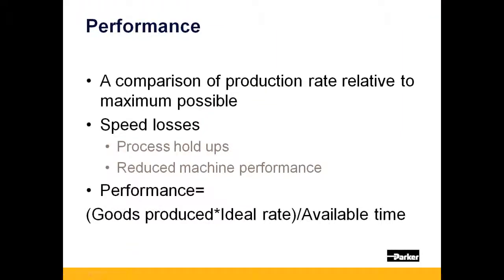The second metric evaluated in the OEE calculation is performance. Performance is a measure of how quickly a work cell or machine can produce goods relative to how long it should take. As performance drops, this indicates a speed loss. Speed losses generally indicate a process holdup from a jam, an obstruction, or that it might be time for some preventive maintenance on your equipment. It might also indicate an operator requires further training.